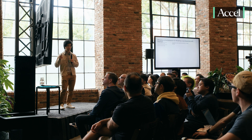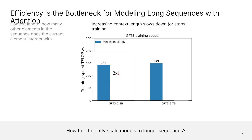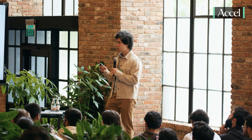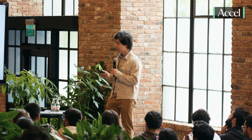It can slow down or completely stop training. Here's an example: I'm just taking Megatron LM, this was two years ago, running on A100. If you have context length 2k, you get very reasonable speeds — about 50% MFU, 50% of the theoretical max of the device, which is quite good. But the moment you increase context length to 8k, things start to slow down significantly, or you go out of memory. We can't just brute force and increase context length.